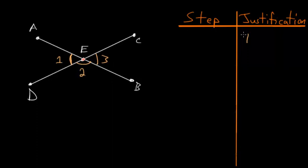We can use Book 1, Proposition 13, which says that if we have a straight line, in this case AB, and a line coming off of it, in this case ED, then the two angles, this angle 1 and this angle 2, must add up to two right angles. So we have that angle 1 and angle 2 must equal two right angles.